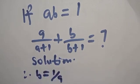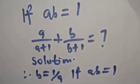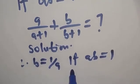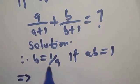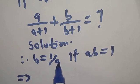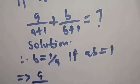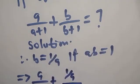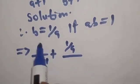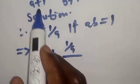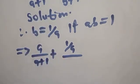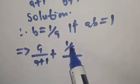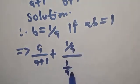If ab is equal to 1, b is equal to 1 over a. Then therefore we have this imply that anywhere you see b you substitute 1 over a. We have a over a plus 1 plus b is 1 over a over, anywhere you see b you substitute 1 over a. Then this one is a over a plus 1 plus our b is 1 over a over 1 over a plus 1.